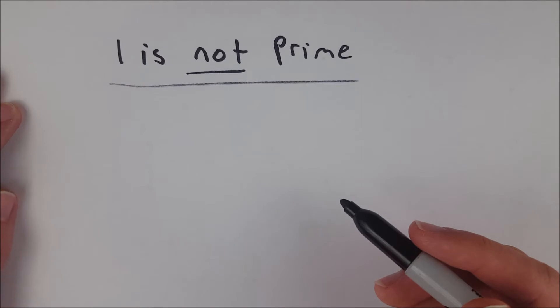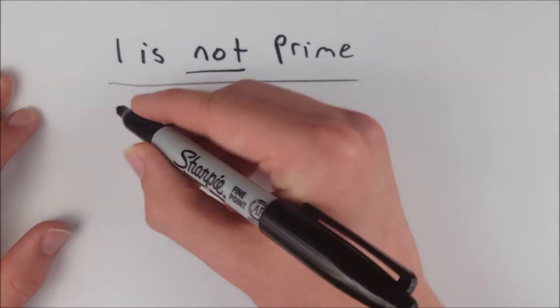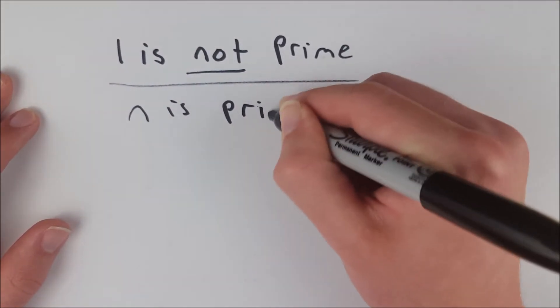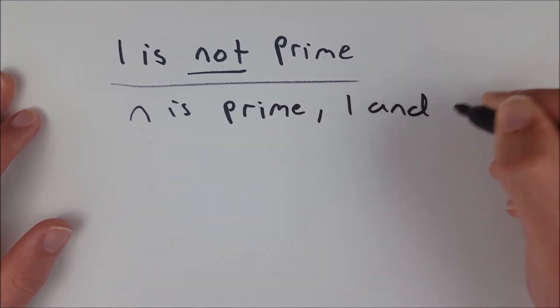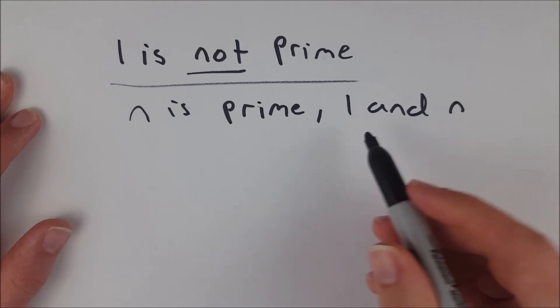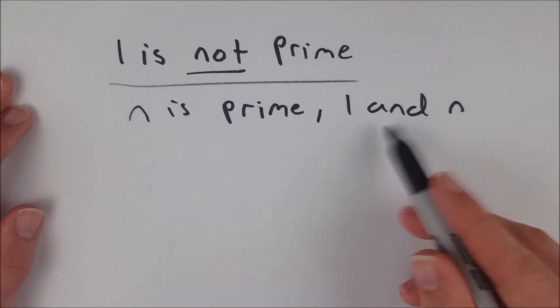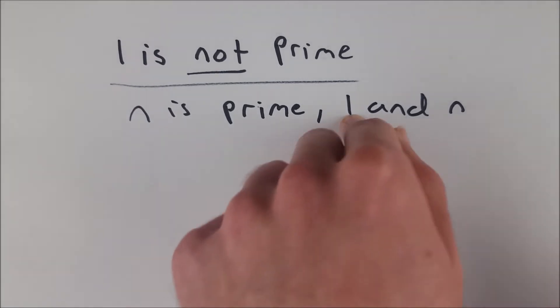You could think of prime numbers as being defined by having exactly two unique factors, right? So if n is prime, then n has two unique factors being 1 and n. So 1 and n divide n. If n is prime, these are the only factors of n, and they are unique, or distinct rather, is the correct word. 1 and n are distinct.